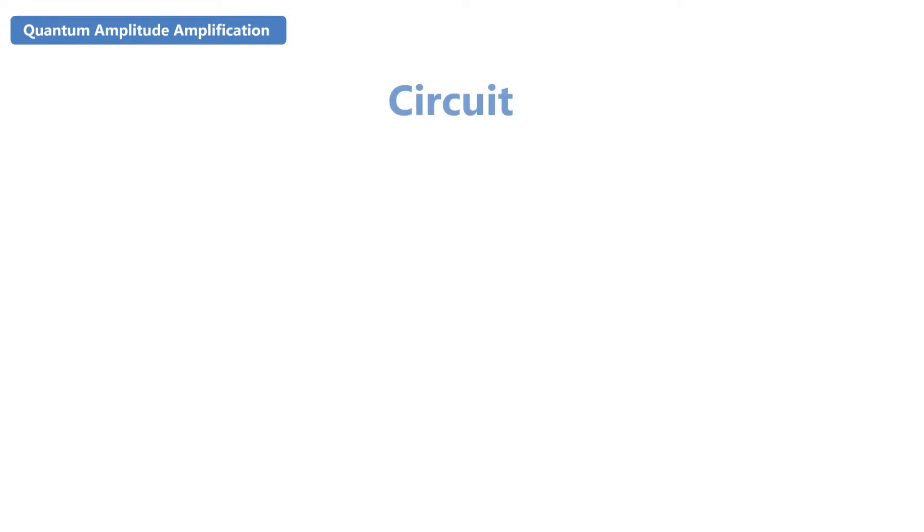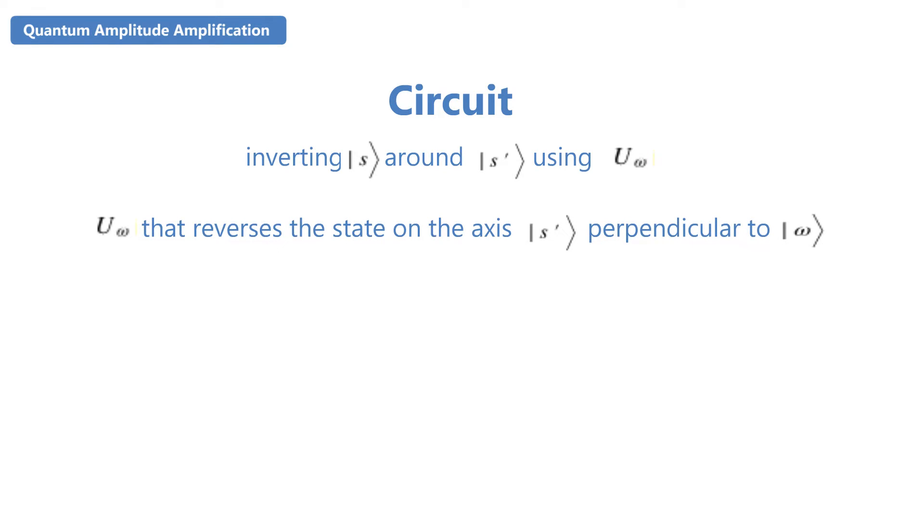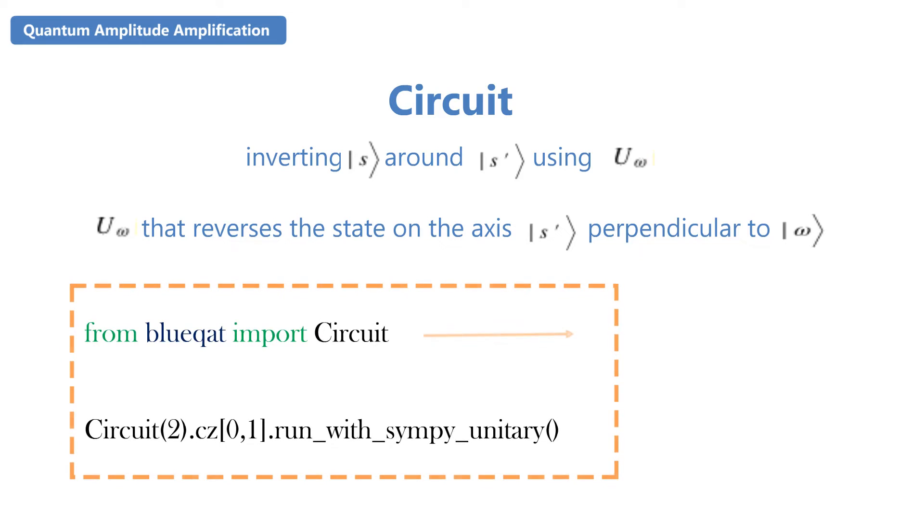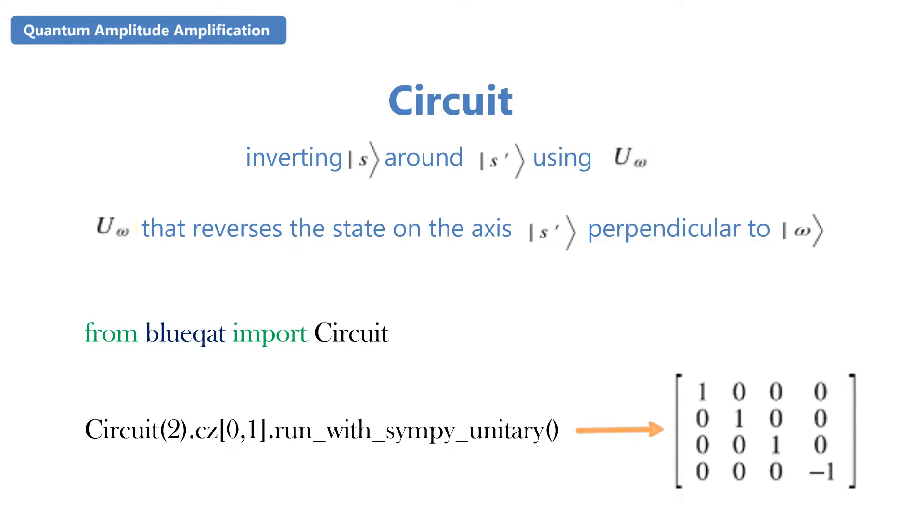So let us do it on Blueqat step by step. First, inverting S around S dash using Uw. First we need to realize a Uw that reverses the state on the axis S perpendicular to W. By the following code it will import Blueqat, then it prepares a diagonal matrix which is one element is minus one and others are one.